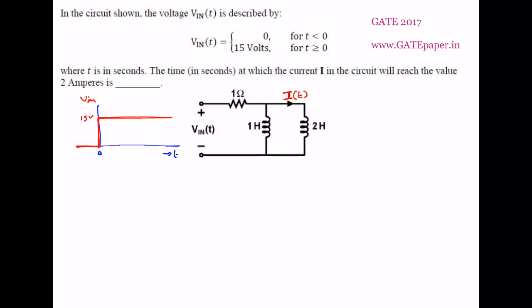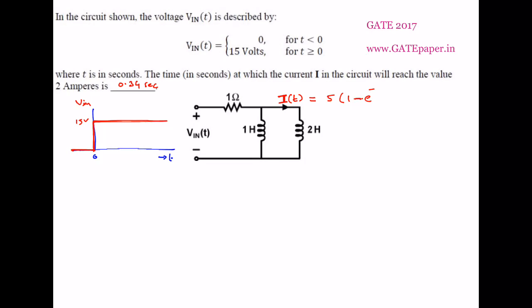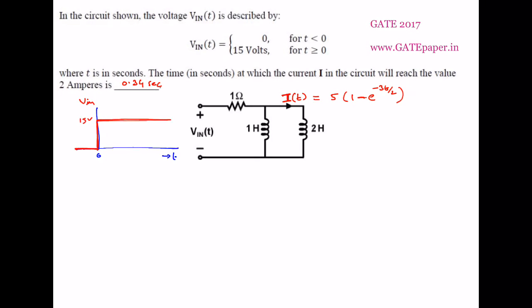The right answer for this one is 0.34 seconds. I(T) is calculated as 5 into 1 minus e to the power minus 3T by 2. This is the current flowing through the 2 henry inductor equation.